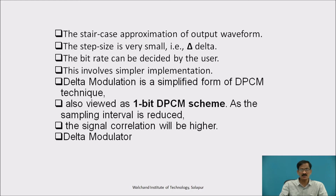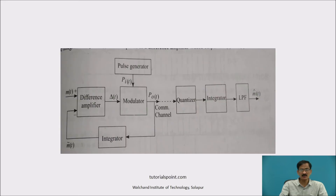The bit rate can be decided by the user. This involves simpler implementation. Delta modulation is a simplified form of the DPCM technique, also viewed as a one-bit DPCM scheme. As the sampling interval is reduced, the signal correlation will be higher — that is the delta modulator.